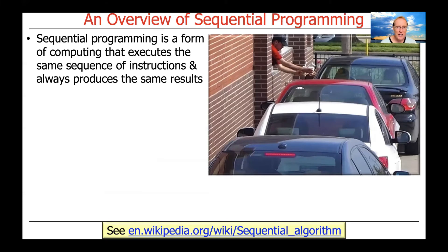So a good place to start, really the starting point, this is something you've probably been doing pretty much since you started programming, is sequential programming. And we need to understand sequential programming in order to be able to compare and contrast it with concurrent programming. So sequential programming is a form of computing that executes the same sequence of instructions and always produces the same results.